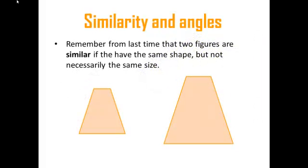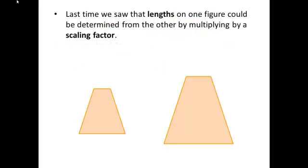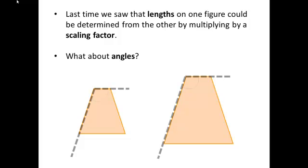Last time, we said that two figures were similar if they had the same shape, but not necessarily the same size. We saw that the lengths from one figure could be determined from the other by multiplying by a scaling factor. Does that work for angles too? Well, let's go and take some angle measurements. If we were to measure the top corner right here, I would find that on the little shape it measures 100 degrees. But on the big shape it also measures 100 degrees, so they're the same.